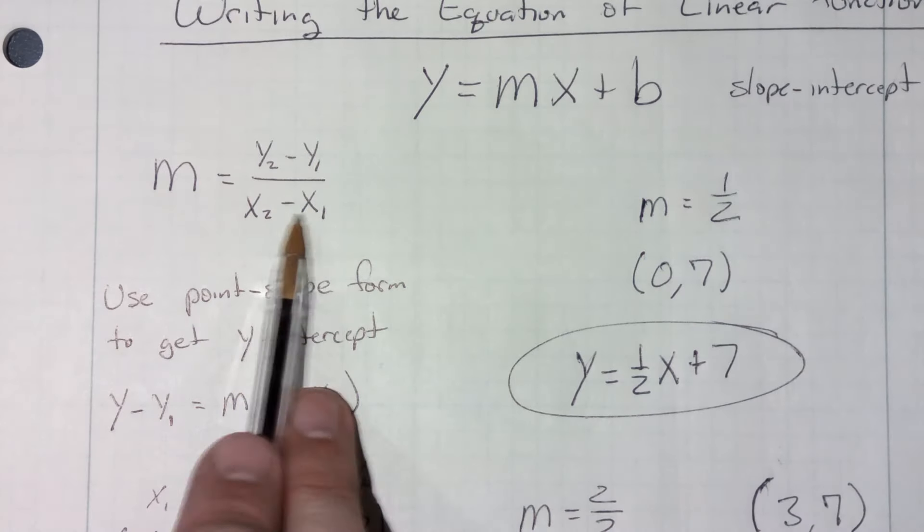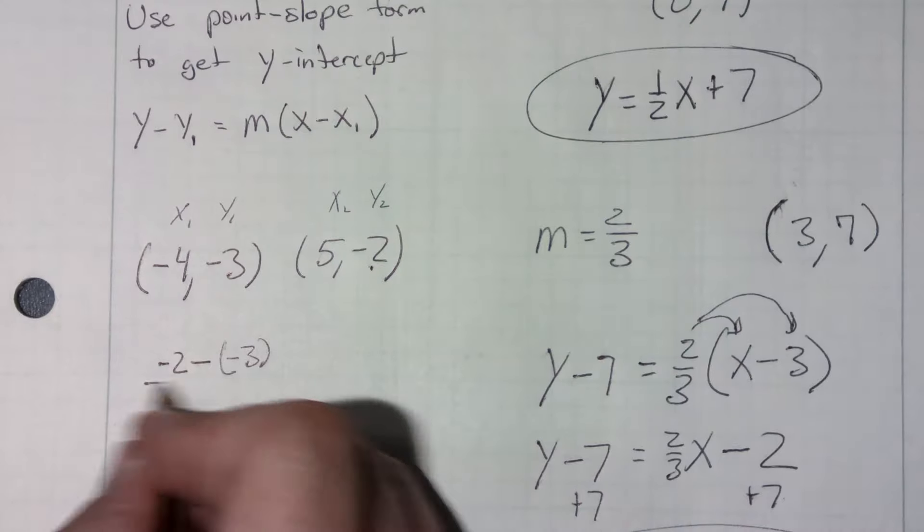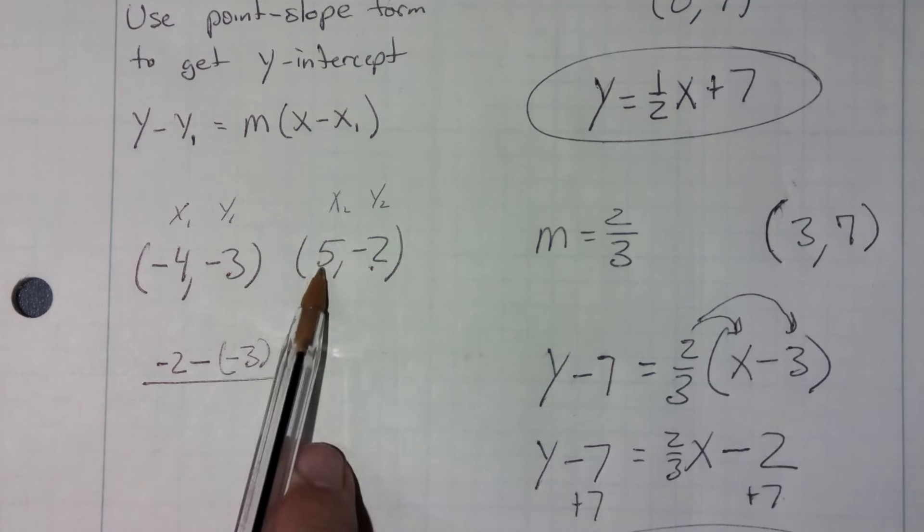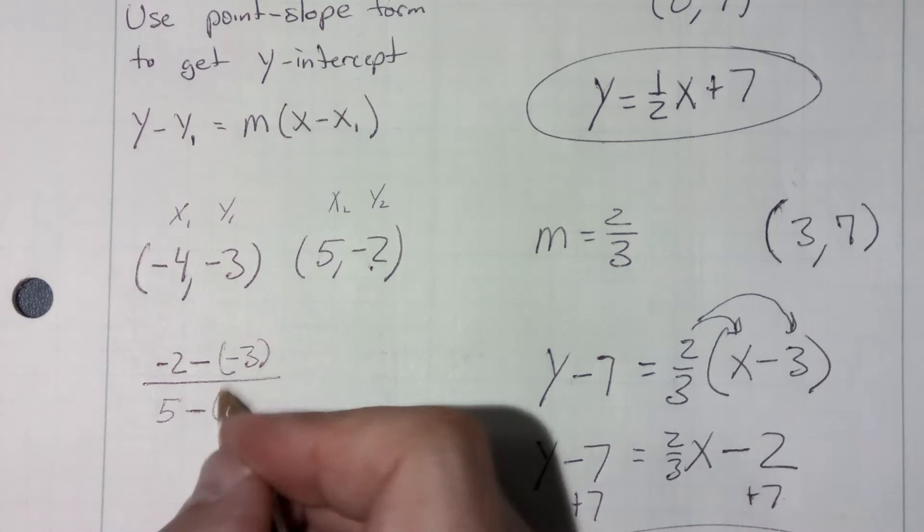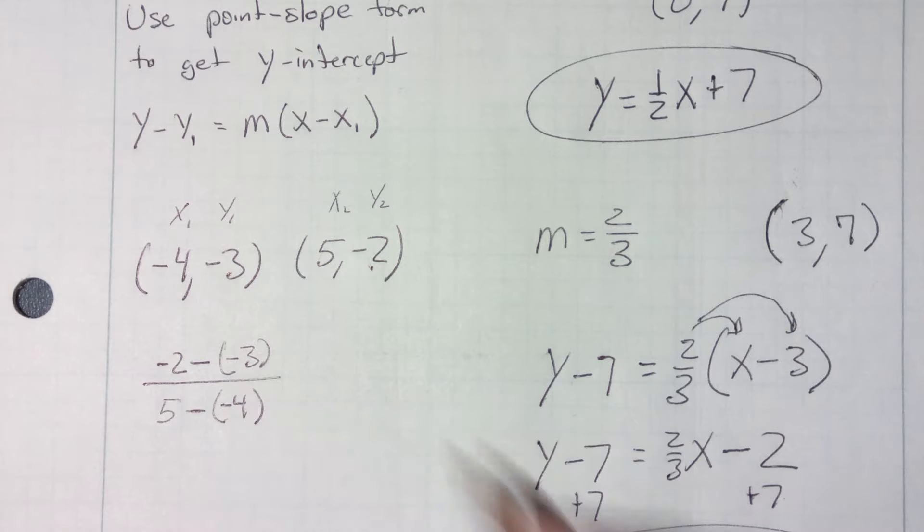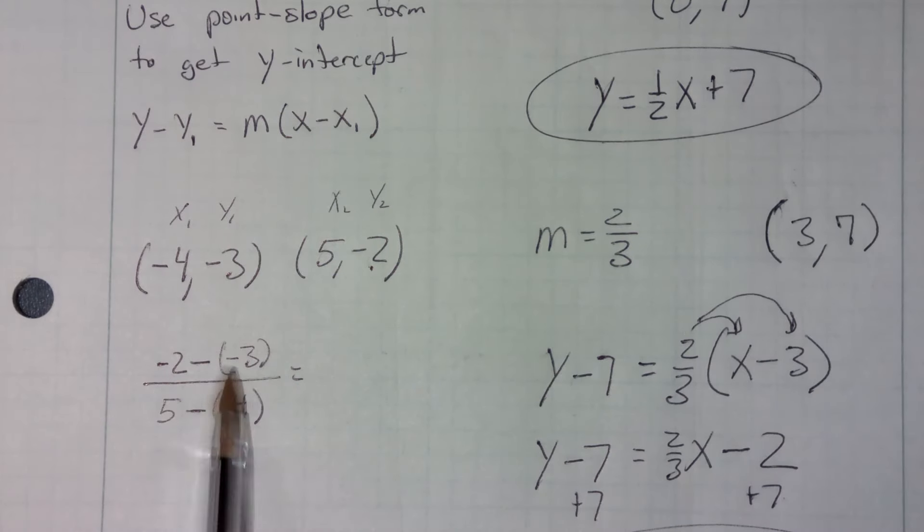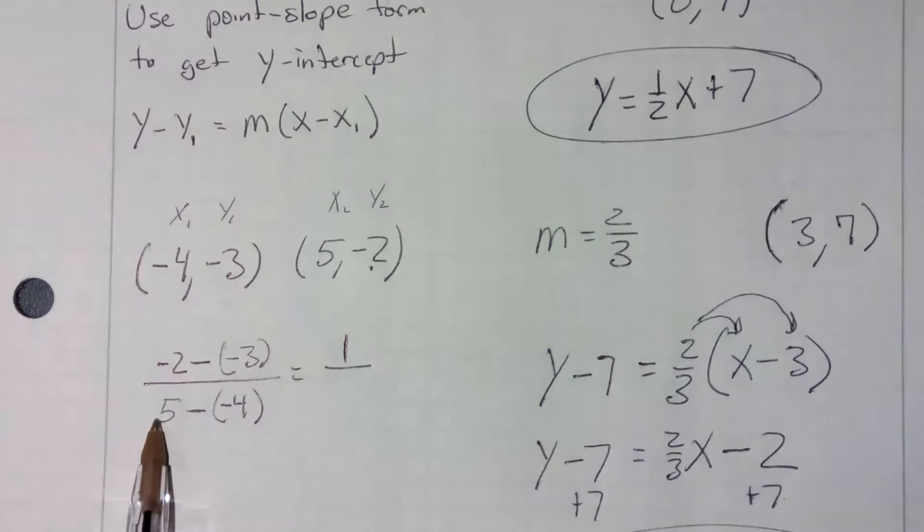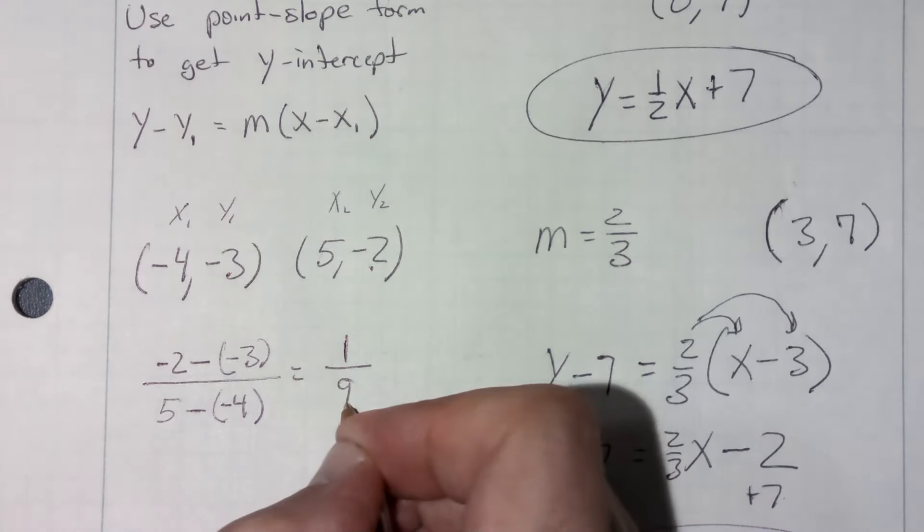Same thing when it comes to the x's. So what I'm going to do down here now is I'm going to put that y2 minus y1 over my second x value is 5 minus my first x value, which is negative 4. Now let's simplify that slope. Negative 2 minus a minus means I'm adding, plusing 3. So I get negative 2 plus 3 is 1 over 5 minus a minus 4 or 5 plus 4 is 9. My slope is 1 ninth.